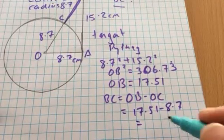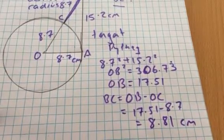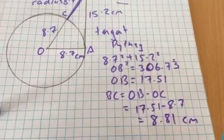8.81. And we just have to check the degree of accuracy that they ask for. Fantastic. Use of Pythagoras in circles.